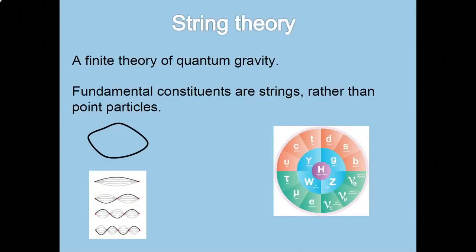So string theory is a finite theory of quantum gravity. Finite means that the predictions it makes for given scattering processes are always finite. There's no regularization and renormalization of infinities needed, as we sometimes have to do in regular quantum field theories. In string theory, the fundamental constituents are strings, either closed strings or loops or open strings with two endpoints, rather than this whole panoply of particles in the standard model of particle physics.